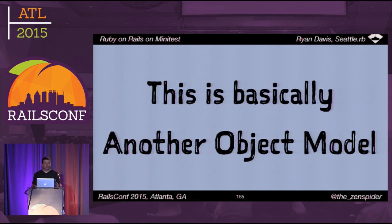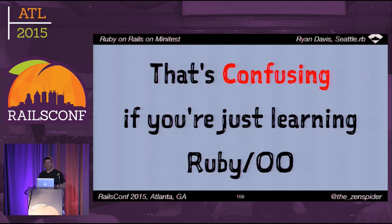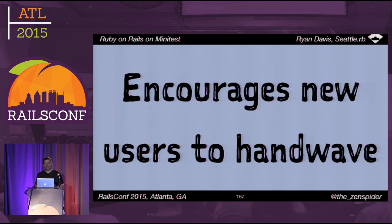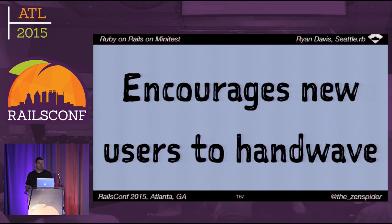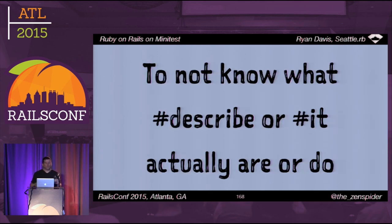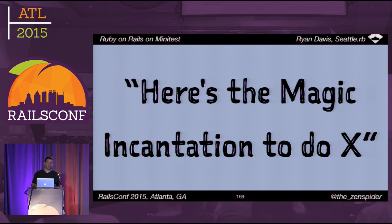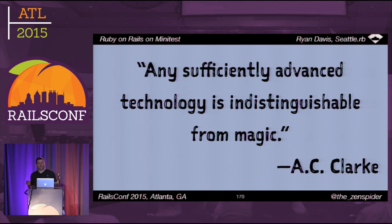To effectively use RSpec you need to learn a whole separate object model that sits on top of Ruby's object model. This is doubly confusing if you haven't already learned the Ruby object model, or if you're just trying to learn both at the same time — you'll get overwhelmed. What winds up happening is it encourages users to hand-wave. Beginners don't have the time or ability to dig in and learn both object models, so it encourages them to not know what describe and it actually are and do. It's basically 'here's the magic incantation to do X.'